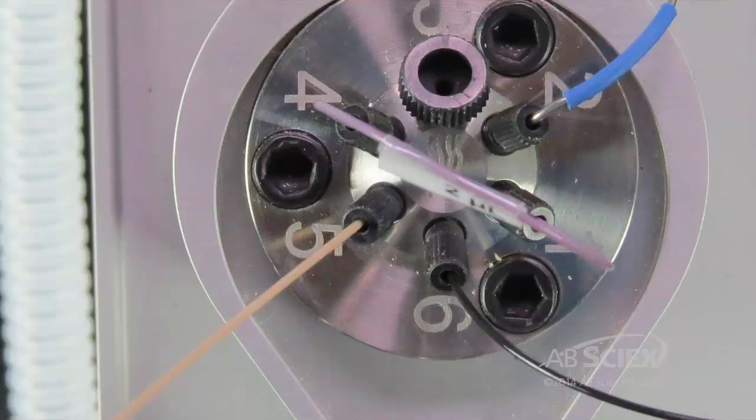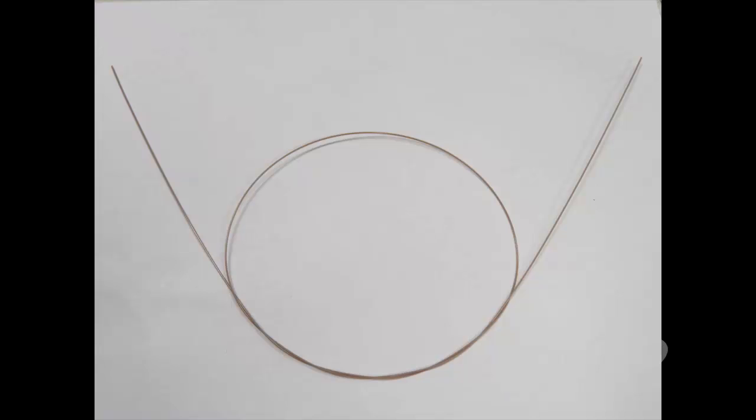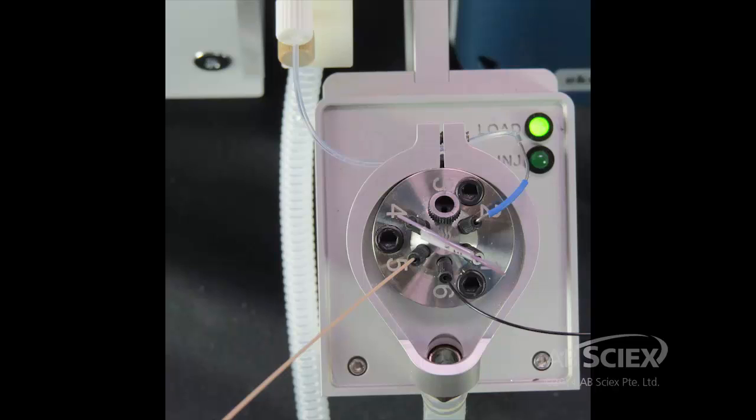Connect the column to port 5. Use peak seal tubing, part number 205-00040 for 30cm length, or part number 205-00041 for 50cm length, and fit to port 5 with a black peak headless fitting and tighten using the small tightening tool.